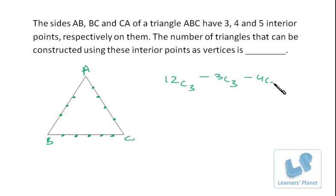Now here there are five points on this line, so we need to deduct the combinations obtained by these five points, so it's 5C3. So it's 12C3, that is 12 into 11 into 10 by 6.